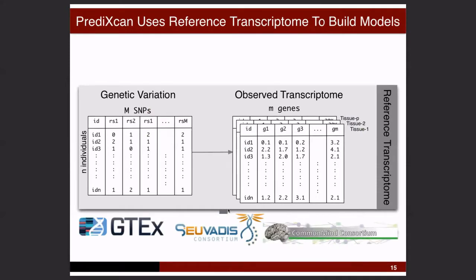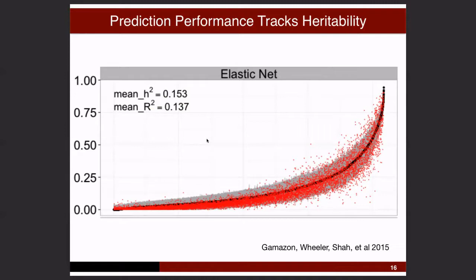We have a genotype data matrix and observed transcriptome data — what we call reference transcriptome datasets. We can train models on this. This method will only work if we can predict gene expression well, and we have seen that it can be predicted well for genes that are highly heritable. Here I'm showing genes ordered by estimated heritability, and the predicted performance measure goes up as heritability increases.